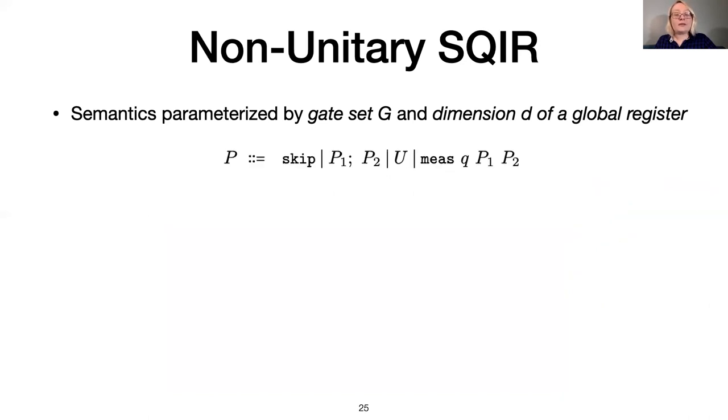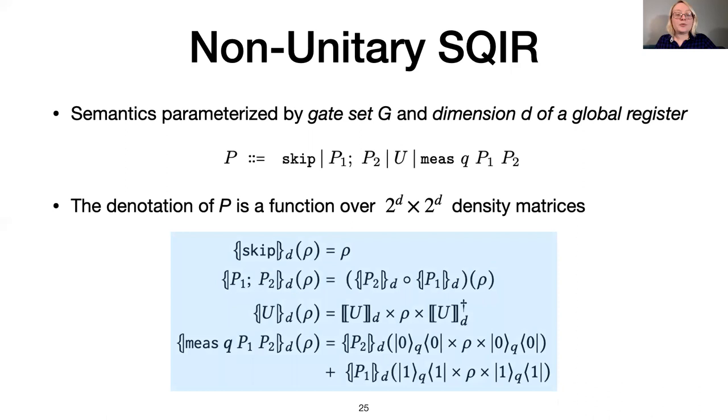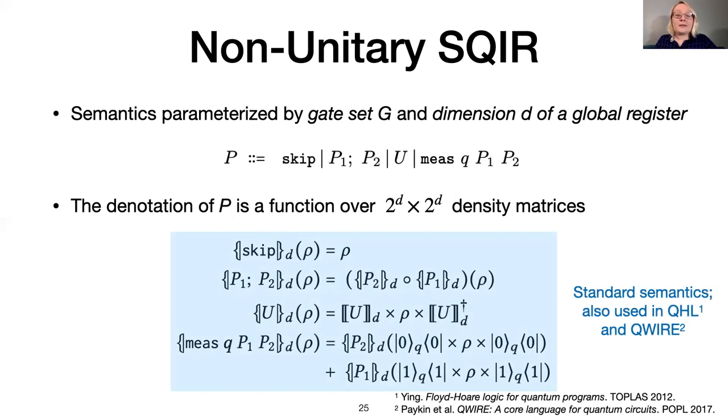Full SQUIRE includes skip, sequencing, unitary sub-programs, and branching measurement. The command meas Q p1 p2 measures qubit Q and either performs program p1 or p2, depending on the result. Formally, the semantics of a full SQUIRE program is a function over density matrices. Skip is an identity function, sequencing is function composition, and the semantics of a unitary sub-program is defined using the unitary semantics from the previous slide. Finally, the interesting case, the semantics of measurement is a sum of two terms. The first term is the result of applying p2, in the case where qubit Q is collapsed to the zero state. The second term is the result of applying program p1, in the case where qubit Q is collapsed to the one state. Note that this density matrix-based semantics is standard, and has been used in other settings, like the quantum Hoare logic and the QWIRE language.